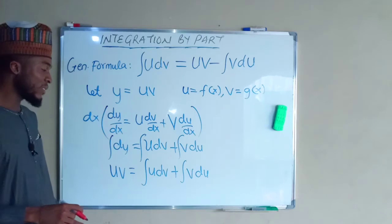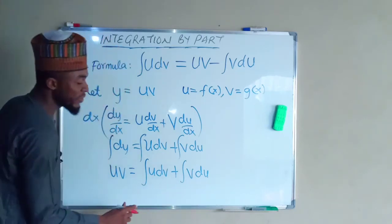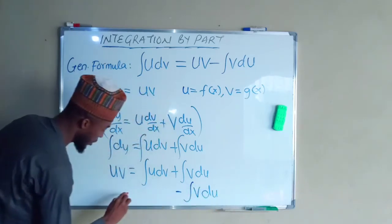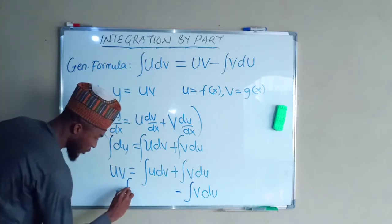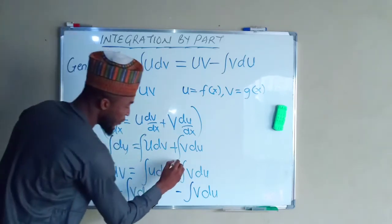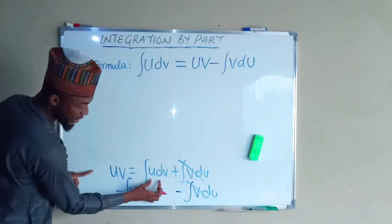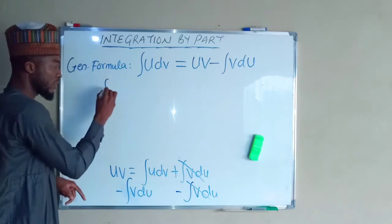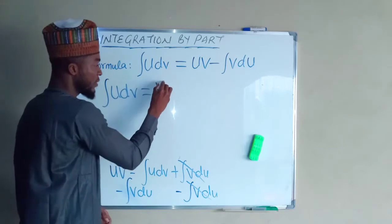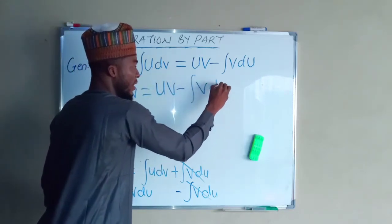So therefore we have uv equals the integral of u·dv plus the integral of v·du. What we do next is subtract the integral of v·du from both sides — this cancels that term — and therefore we arrive at: the integral of u·dv equals uv minus the integral of v·du.